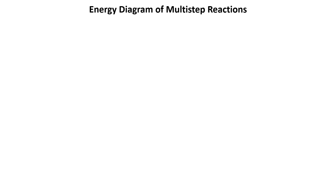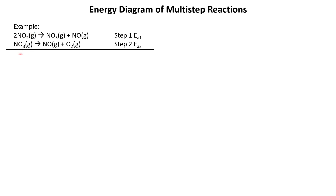One final energy diagram I want to show you is an energy diagram of a multi-step reaction. Not all reactions occur in one step, so what does a diagram look like if you have more than one step? Let's take this example — we have two steps with EA1 and EA2, and together they give us the overall reaction.